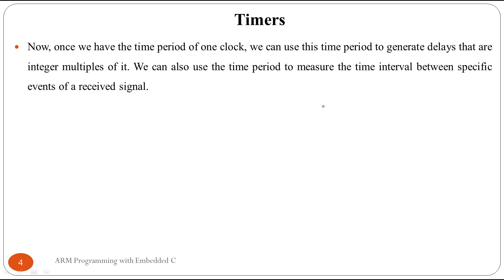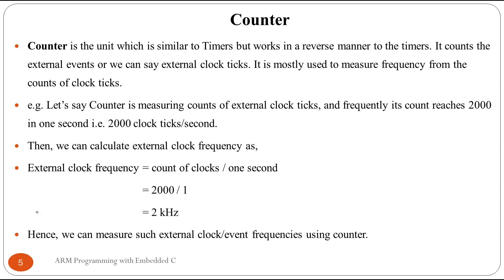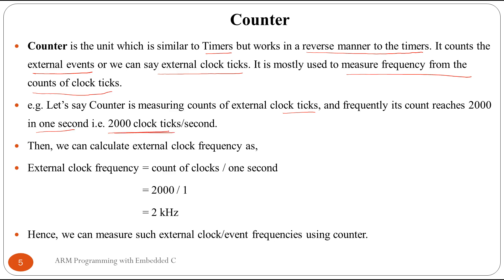A counter is a unit similar to a timer but works in reverse — it counts external events or external clock ticks. Counters are used to measure the frequency of external signals. For example, if a counter measures 2000 external clock ticks in one second, that means the external clock signal has a frequency of 2 kilohertz.